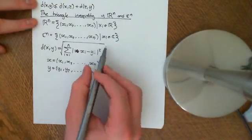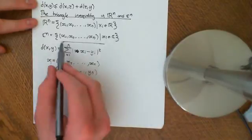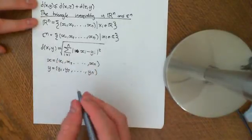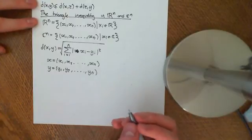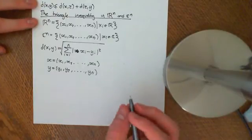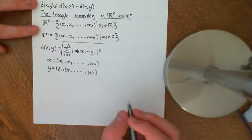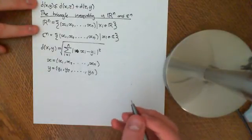So we've already checked that this function will obey axioms 1 to 3 of metric space. So we just now want to make sure that it's going to obey axiom 4 of a metric space, i.e., the triangle inequality. And the way that we're going to do this is we're going to use Minkowski's inequality. So in the process of deriving Minkowski's inequality,